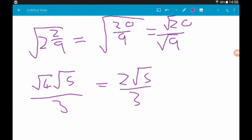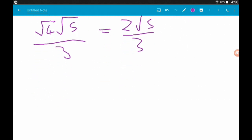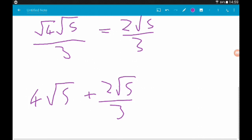So, now our question, root 80 is 4 root 5 and 2 root 5 over 3. So, we've got a whole amount of root 5, 4 root 5 and a fractional amount.